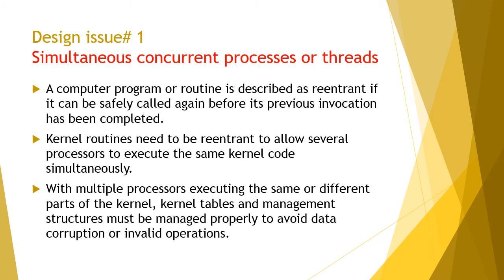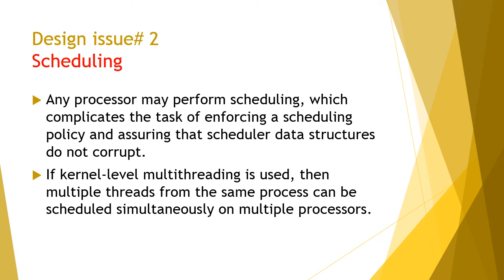With multiple processors executing the same or different parts of the kernel, kernel tables and management structures must be managed properly to avoid data corruption or invalid operations. For scheduling, any processor may perform scheduling, which complicates enforcing a scheduling policy and ensuring that scheduler data structures do not corrupt. If kernel-level multi-threading is used, multiple threads from the same process can be scheduled simultaneously on multiple processors.